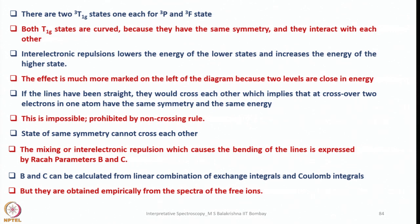The mixing or interelectron repulsion that causes the bending of the lines is expressed by the Racah parameters B and C. B and C can be calculated from a linear combination of exchange integrals and Coulomb integrals, but they are obtained empirically from the spectra of the free ions. When theoretical predictions differ from experimental values, Racah parameters are incorporated to bring theoretical values into agreement with observed values.